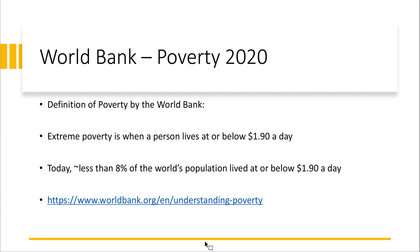The World Bank's definition of poverty focuses on what's called extreme poverty — when a person lives at or below $1.90 a day. Today, roughly less than 8% of the world's population lives at or below $1.90 a day. In poor places things are cheaper, but not that much cheaper, and you're spending most of your income on food and shelter, stuck in what they call a poverty trap — you can't figure your way out because there's no way to generate enough of a business to break out.